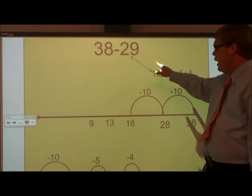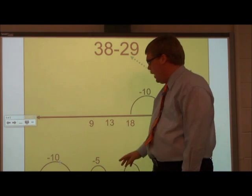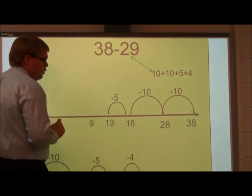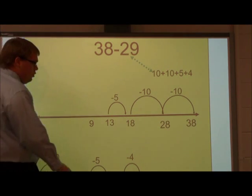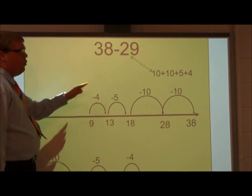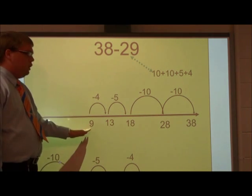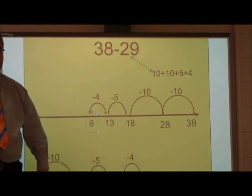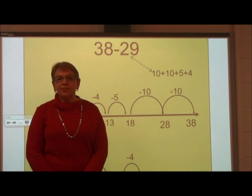Now we subtracted the 20, we have 9 more to do. We are going to break 9 up into 5 and 4. So 18 minus 5 will give me 13. 13 minus 4, and I will end up at 9. So we know that 38 minus 29 is going to equal 9.